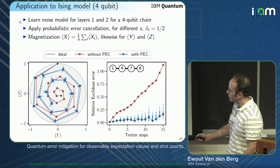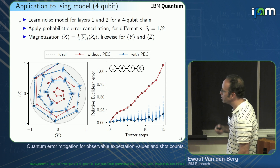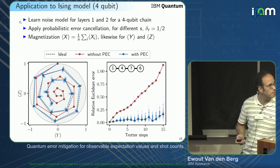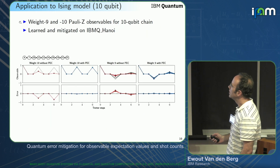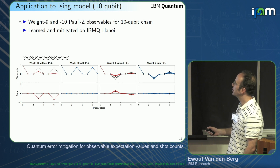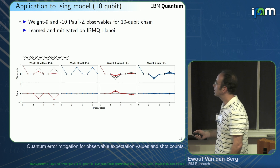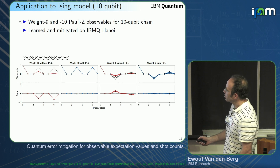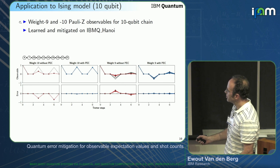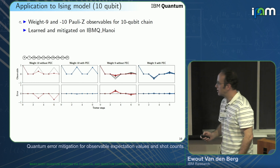This plot shows the relative distance to the ideal case along with bootstrap confidence information, demonstrating that the technique can really help improve performance. Applied on 10 qubits, looking at weight-9 and weight-10 observables, the technique is learned and mitigated on hardware. The weight-10 terms as a function of Trotter steps show a big error without mitigation, but with PEC — even for weight-9 and weight-10 observables — the error is pretty small.